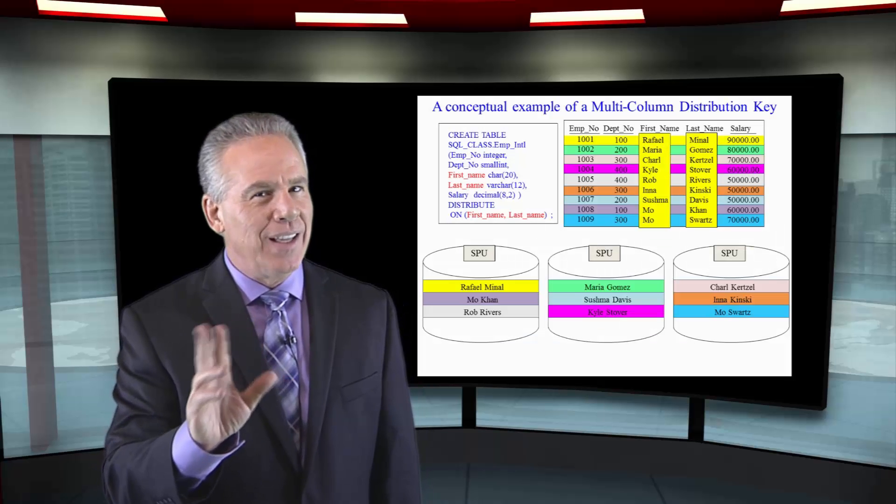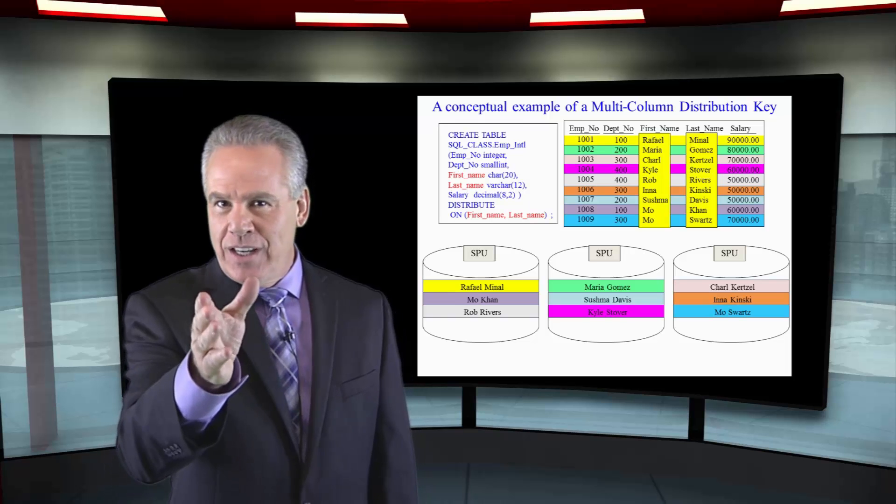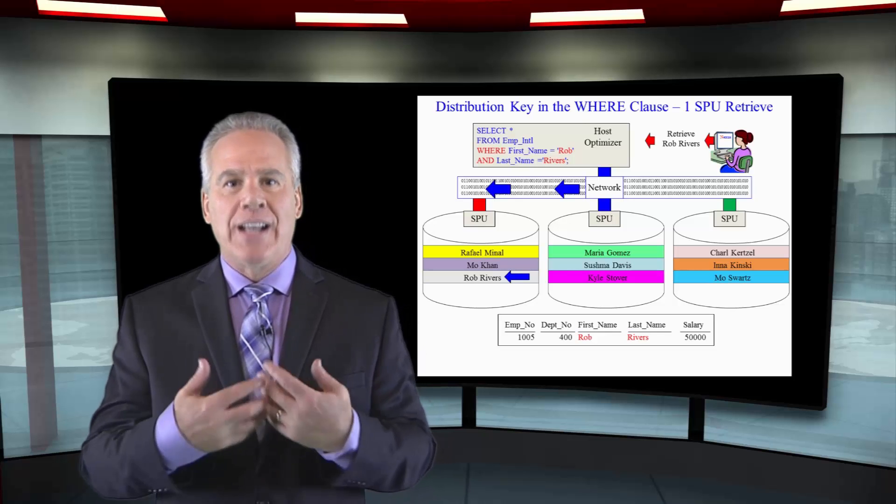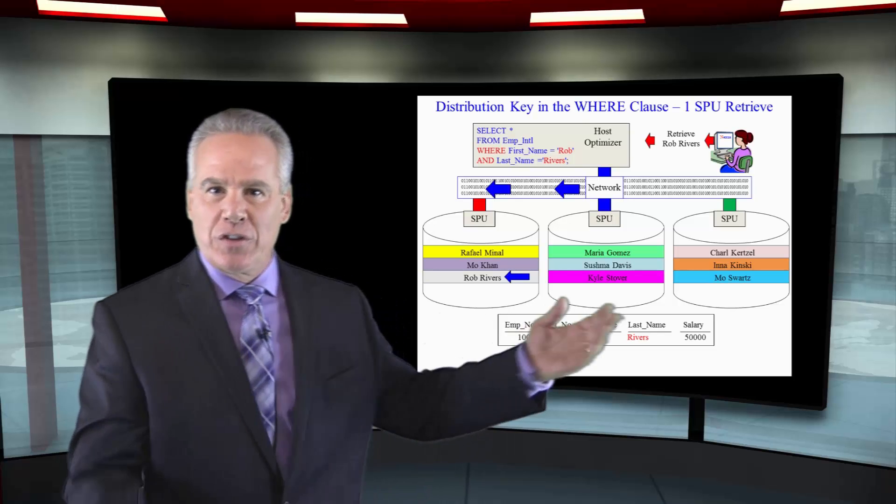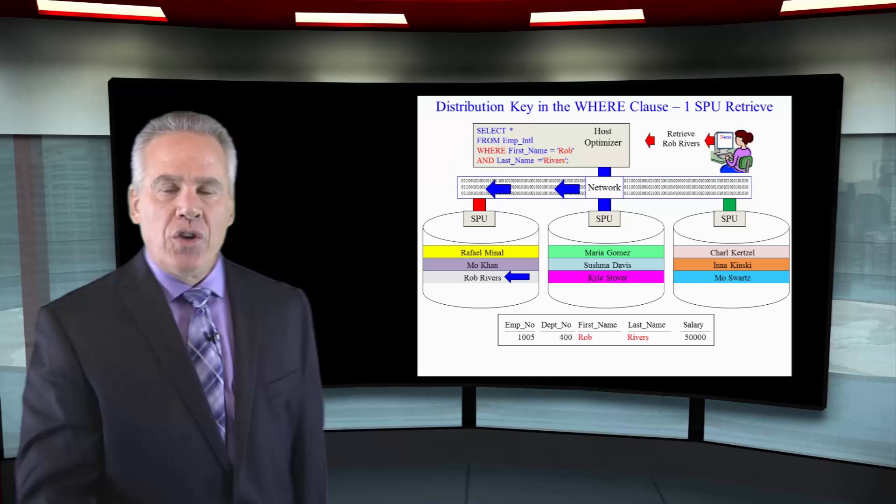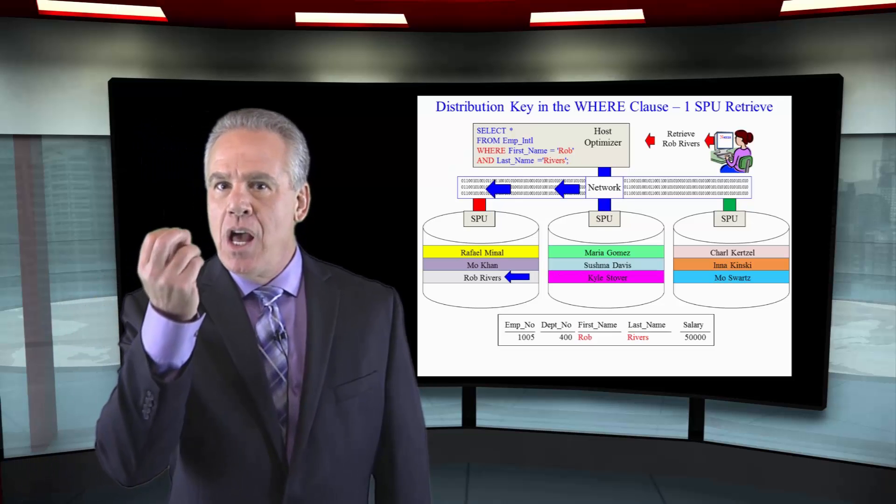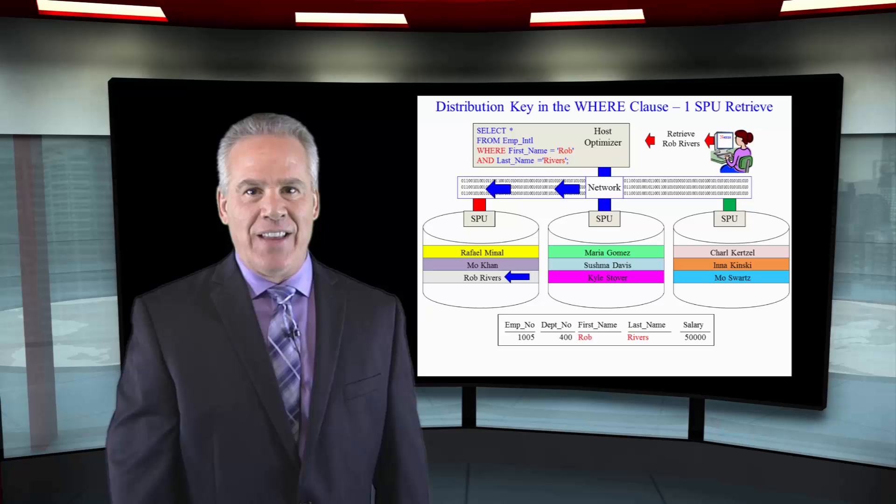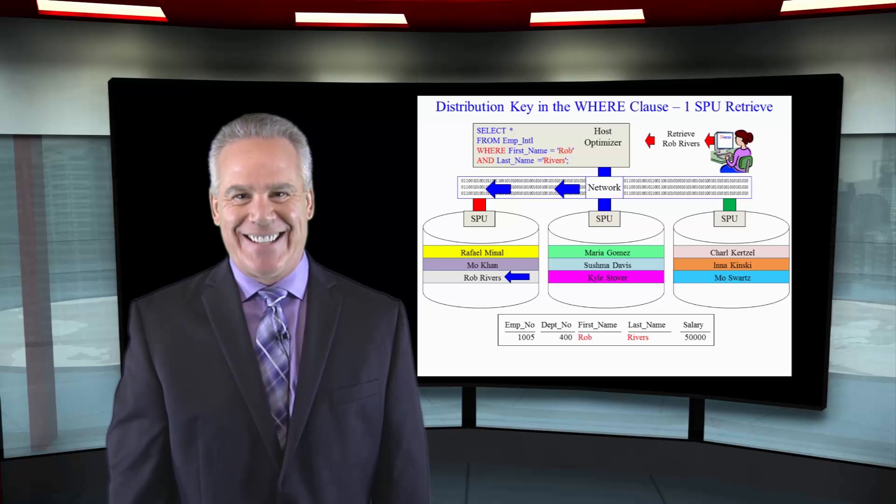But it really isn't quite that simple and you're going to see that next when we go to query this. If you've got a multi-column distribution key such as first name and last name, you're going to have to get a query that uses both in the WHERE clause where we might say WHERE first name is equal to this AND last name is equal to this and then and only then can they say, I know where that data is at.